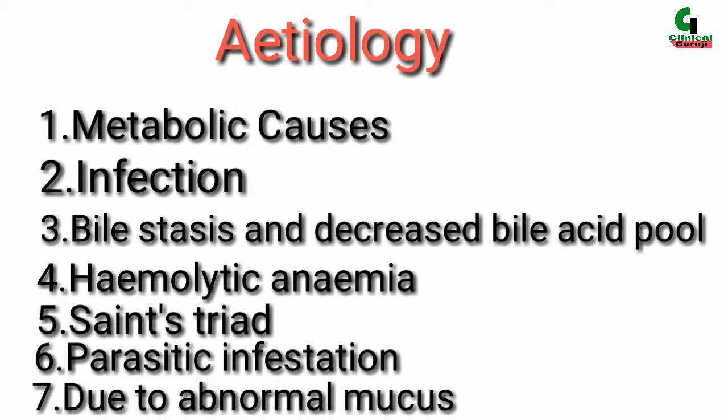Number five: gallstones can occur along with two other conditions — diverticulosis of the colon and hiatus hernia. Number six: parasitic infestation. In oriental countries, Clonorchis sinensis or liver fluke infestation can cause stones in the biliary tree. Ascaris lumbricoides in the biliary tract may produce stones in India.